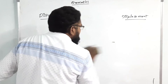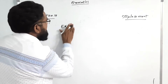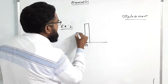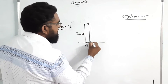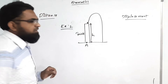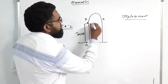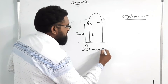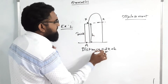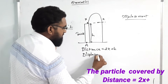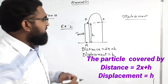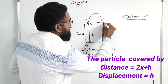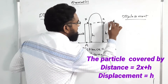Second example: suppose there is a ground and on top there is a tower of height h. A particle is projected upward a distance x above the tower, so the total height above ground is x plus h. Distance is 2x plus h. Displacement is h only — because the initial point and final point differ by height h only.